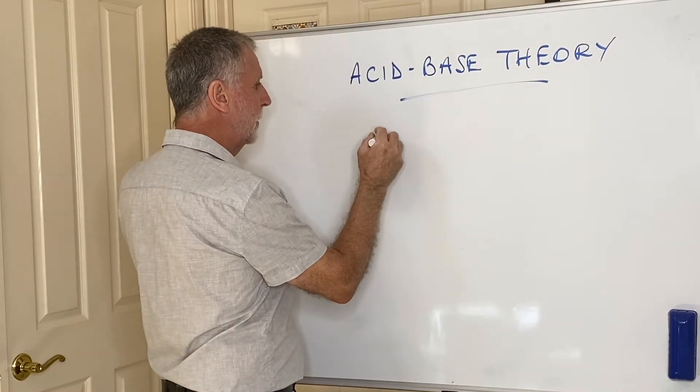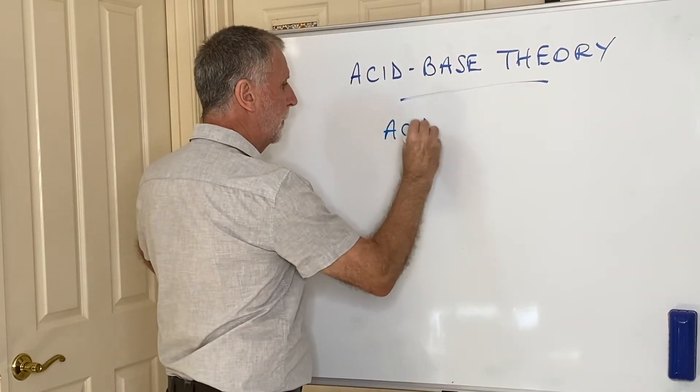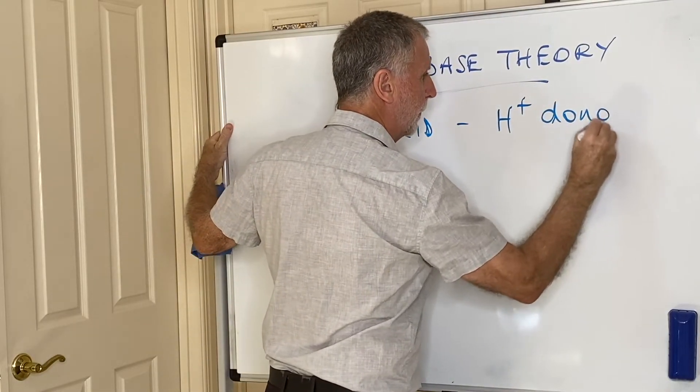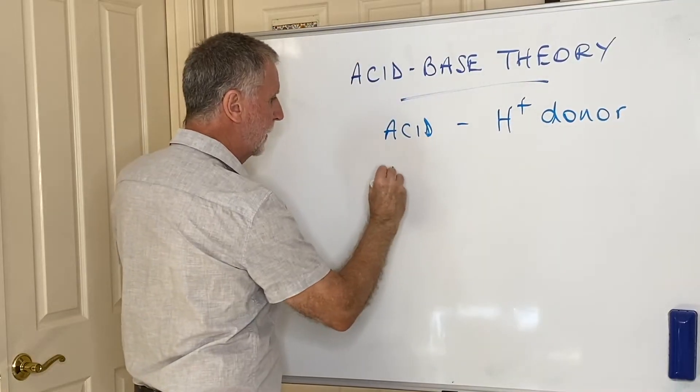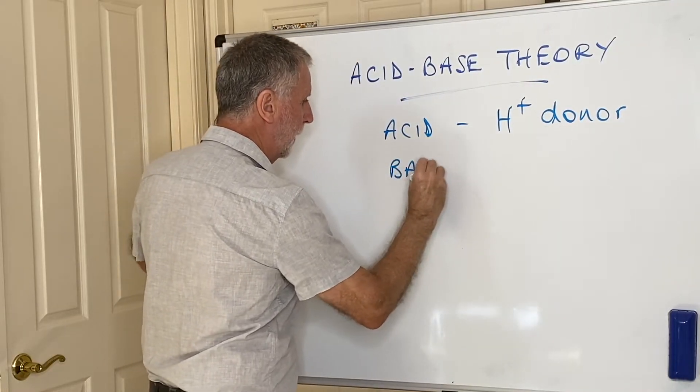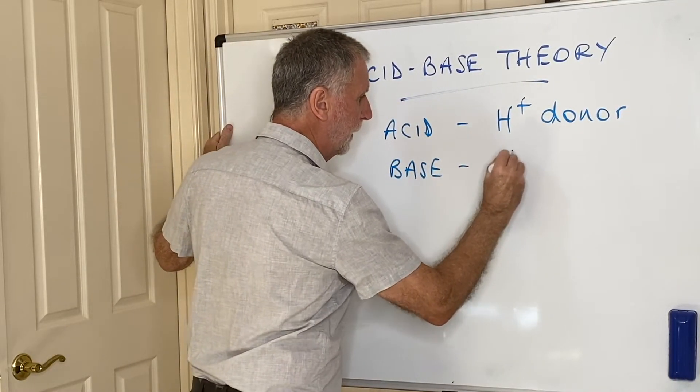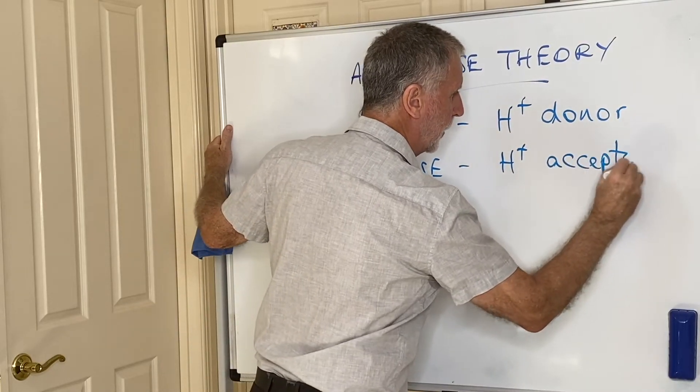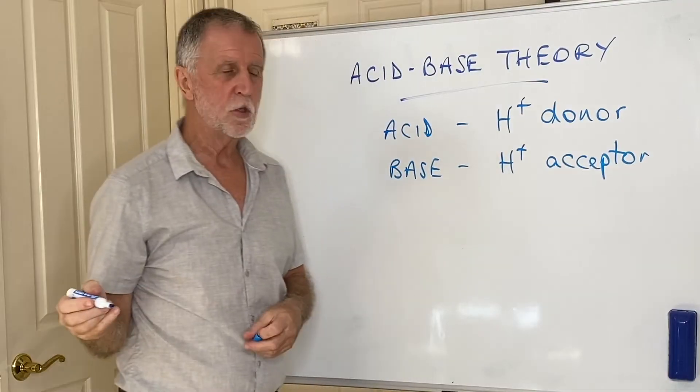An acid, by definition, is a proton donor. A base, by definition, is a proton acceptor, pretty obviously as they are opposites of each other.